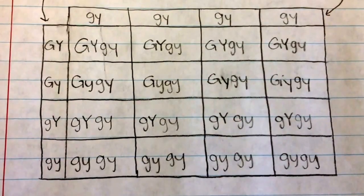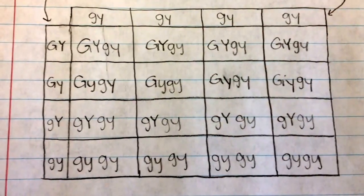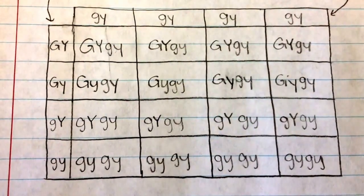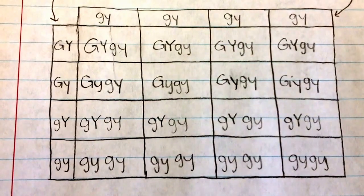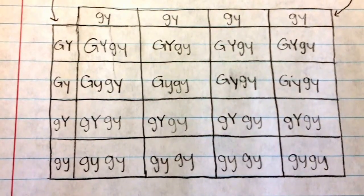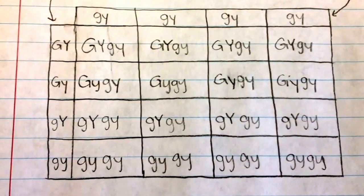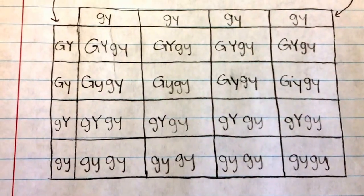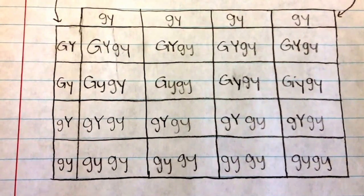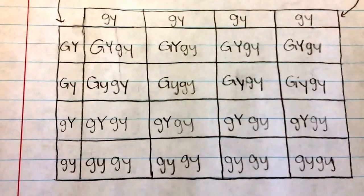After we combine the alleles, we can identify phenotypes. As we go through each cell, we know that if a big G or Y is anywhere in the genotype, the dominant trait will manifest as a phenotype. Recessive traits only manifest if there is no dominant trait present.